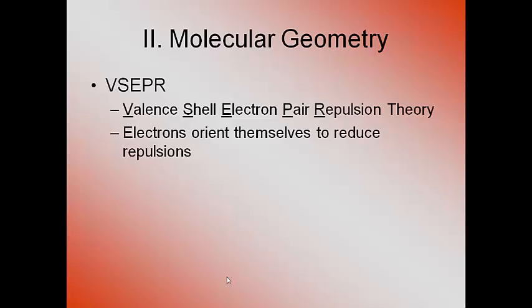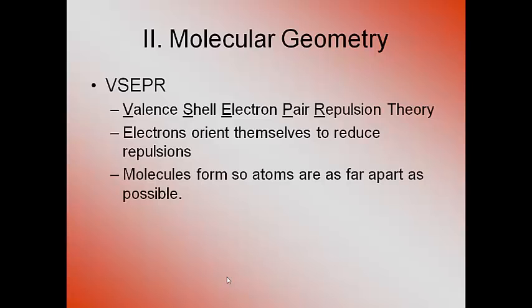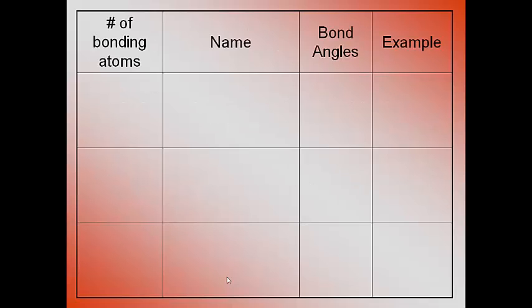That's what valence shell electron pair repulsion theory stands for. Break it down: electron pairs, pairs of electrons, repel, push away, and the valence means they're on the outside layer. So molecules form so the atoms are as far apart as possible. This is why we're going to get different shapes throughout. This is why everything doesn't look like a conga line straight across your page as you're writing it. Now there are a bunch of shapes that we're going to have to do. So this is a big chart that I couldn't fit on one slide.